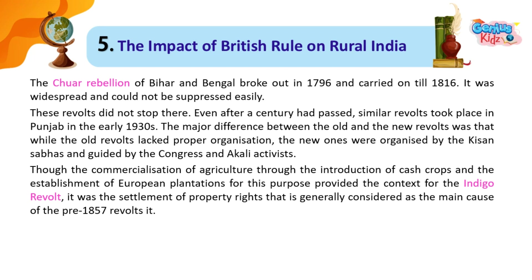These revolts did not stop there. Even after a century had passed, similar revolts took place in Punjab in the early 1930s. The major difference between the old and the new revolts was that while the old revolts lacked proper organisation, the new ones were organised by the Kisan Sabhas and guided by Congress and Akali activists. Though the commercialisation of agriculture through cash crops and European plantations provided the context for the Indigo revolt, it was the settlement of property rights that is generally considered the main cause of the pre-1857 revolts.